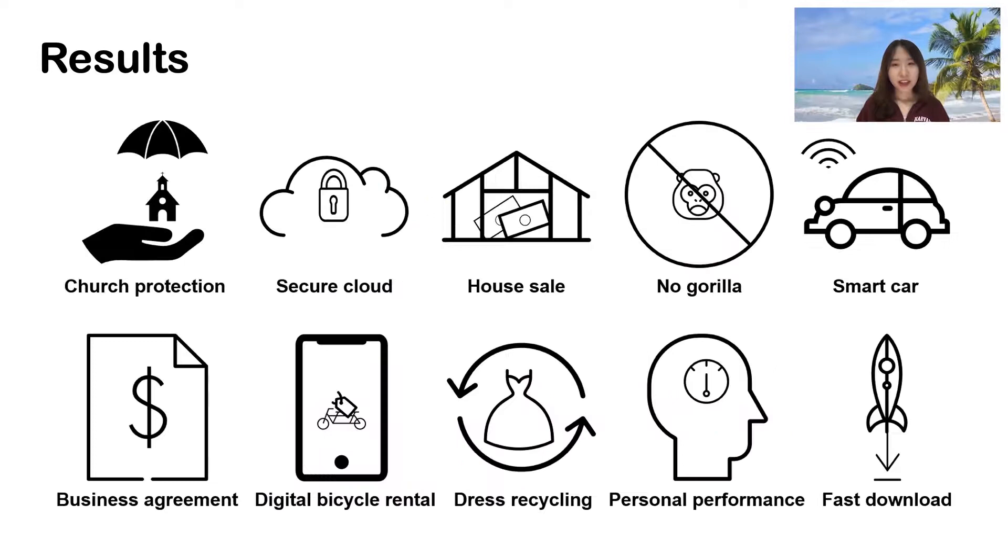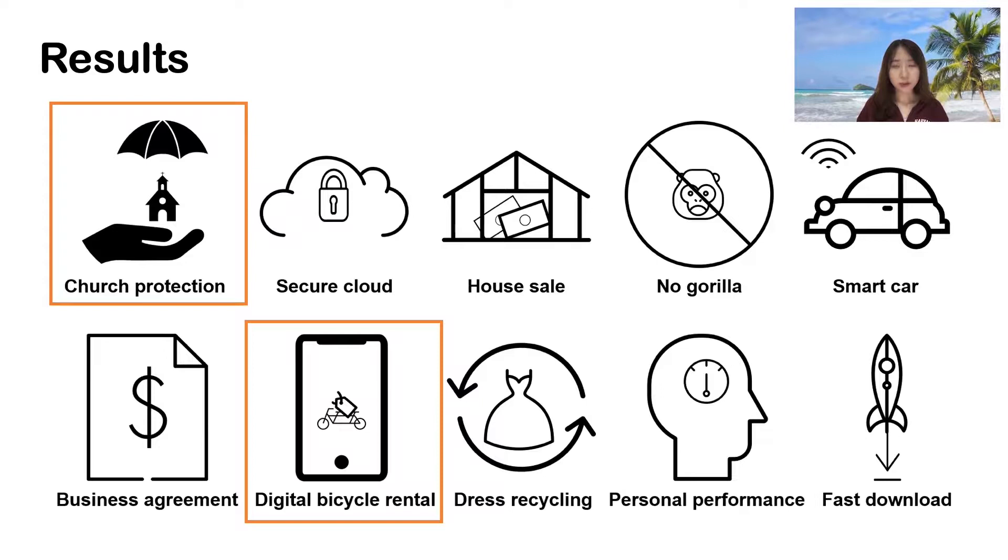Here are automatic results generated by our computational pipeline for a few compound concepts, which have few or no results in existing icon repositories. Note that our pipeline is able to generate compound icons with more than two parts, such as the digital bicycle rental.